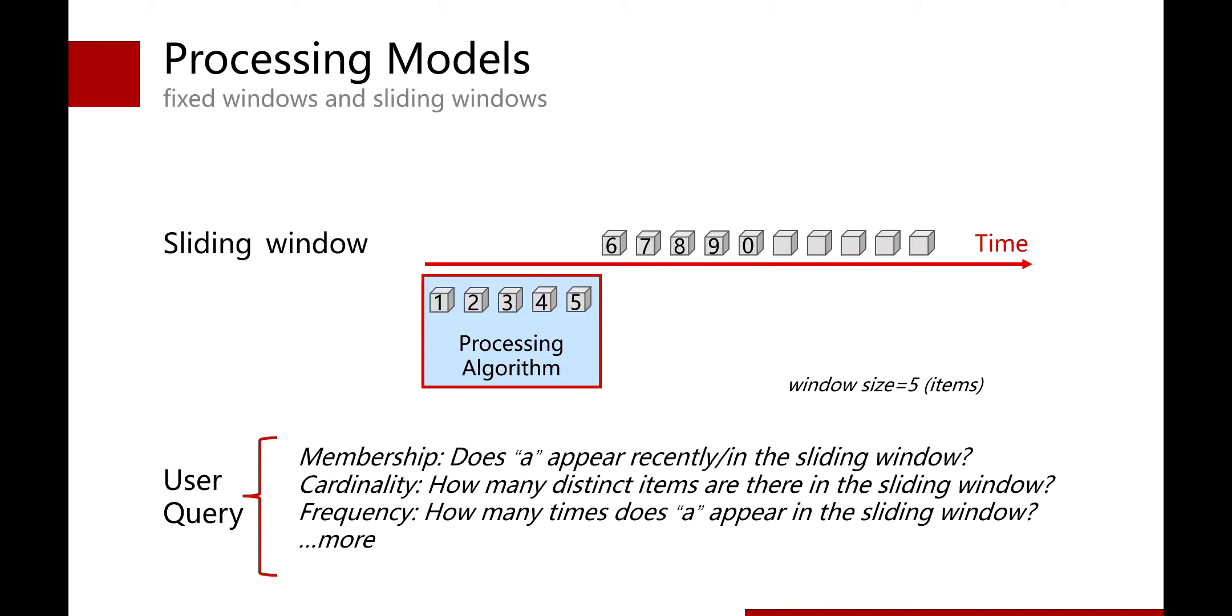Then, we show how sliding-window model works. The sliding-window focuses on the most recent data-item arrivals. The window size can be defined by either the number of items or the real-time. In this example, the window size is five items. The processing algorithm always focuses on those items in a sliding window.